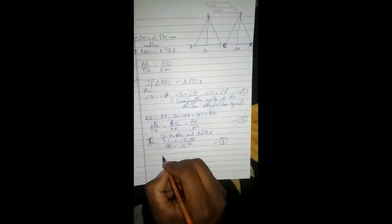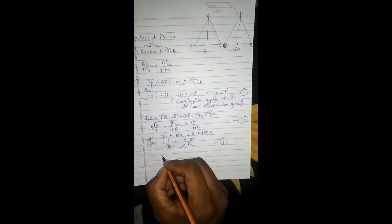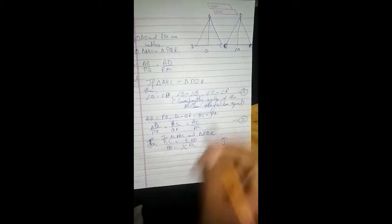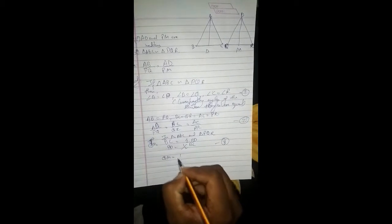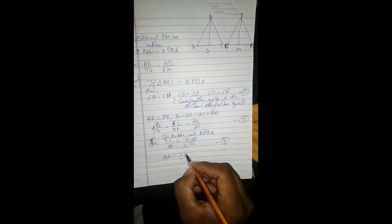Same way if we talk about PQR, QM is equal to half of QR.